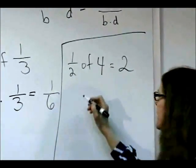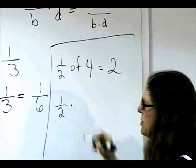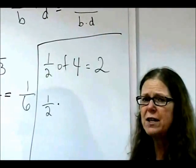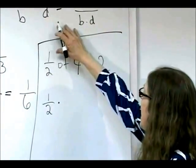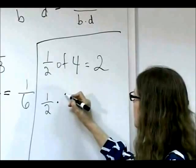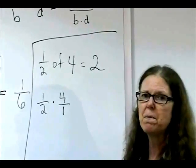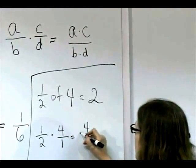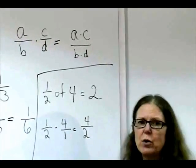But let's take a look at how we could arrive at that mathematically. A half, of always means multiply, and another way to write four, if I wanted to convert it to a fraction so that I could use my rules for multiplying fractions, would be to say that four is the same thing as four divided by one. And that would equal, according to this rule, four times one, which is four, divided by two times one, which is two.